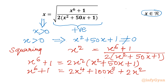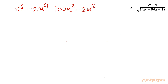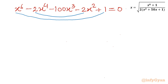Bringing all terms to one side, we can write: x⁶ - 2x⁴ - 100x³ - 2x² + 1 = 0. If you look at this equation, it is in the form of a reciprocal equation as the coefficients are symmetric. Note that x = 0 is not a solution of this equation.